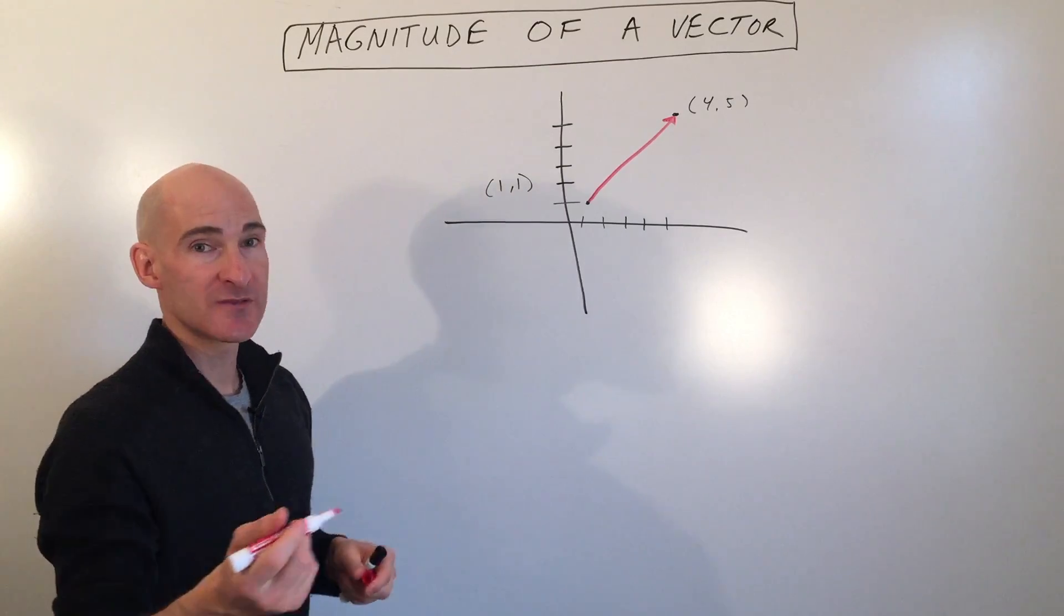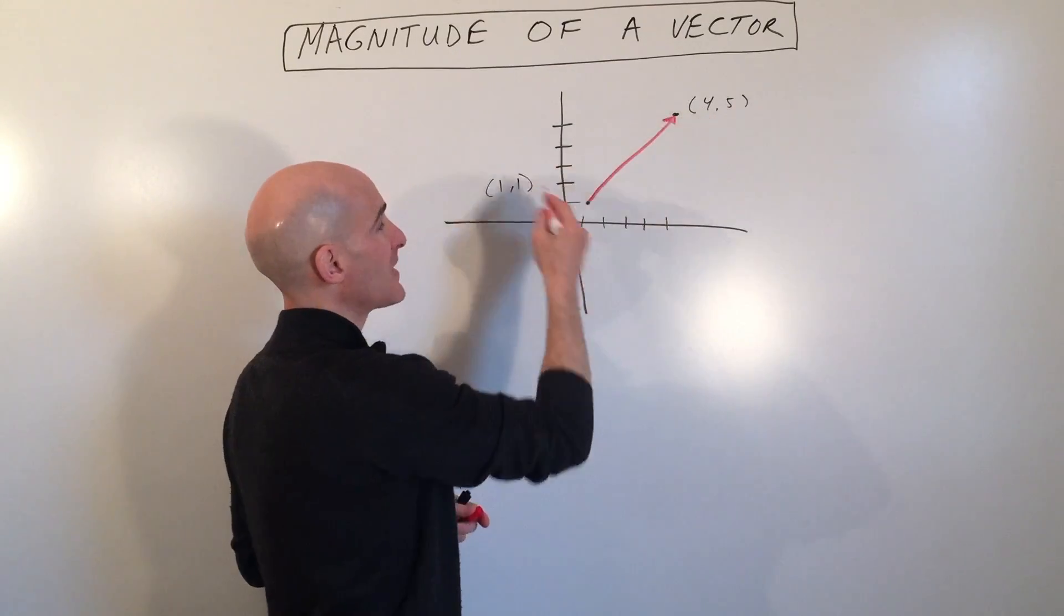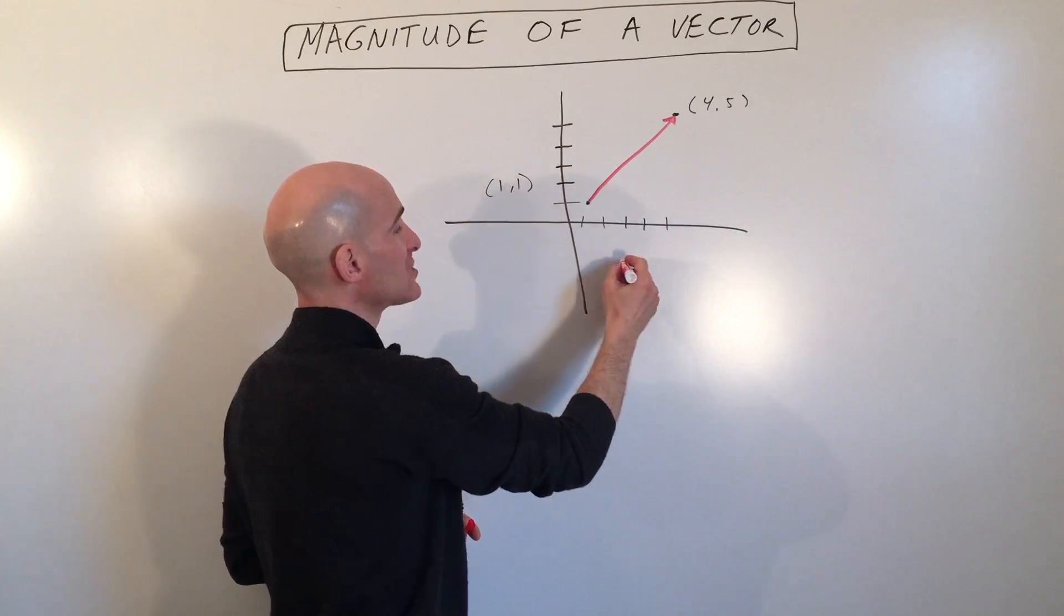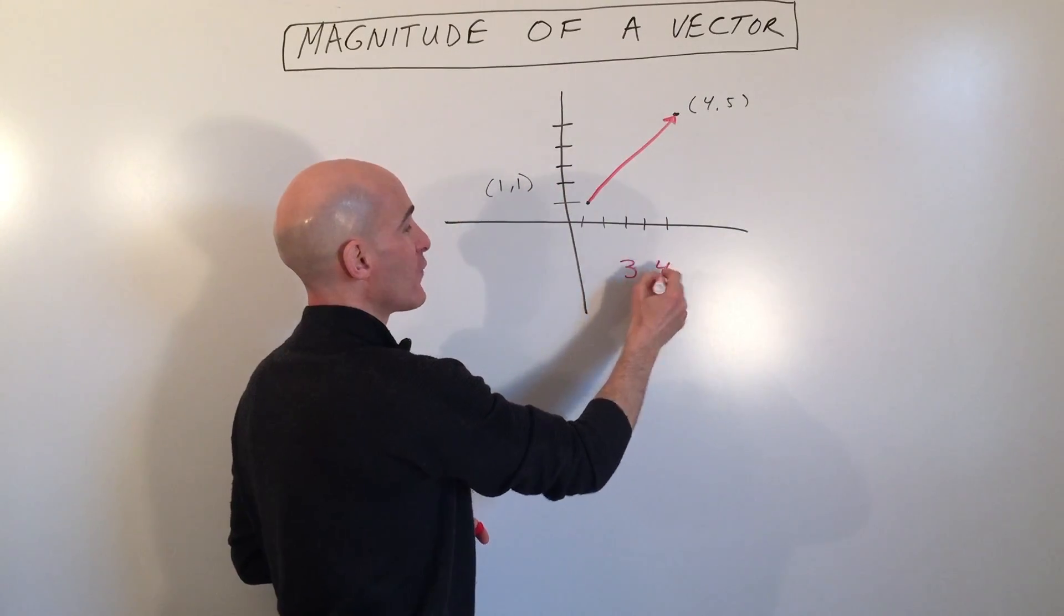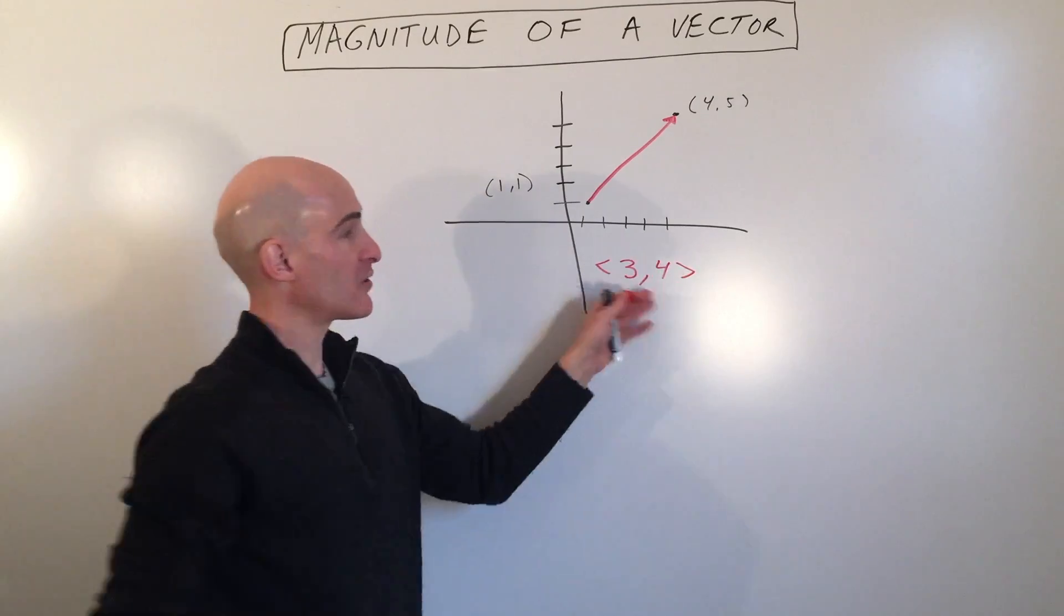Again, we did in a previous video how to find the component form. You take the terminal minus initial, so 4 minus 1, which is 3, 5 minus 1, which is 4, in triangular brackets.